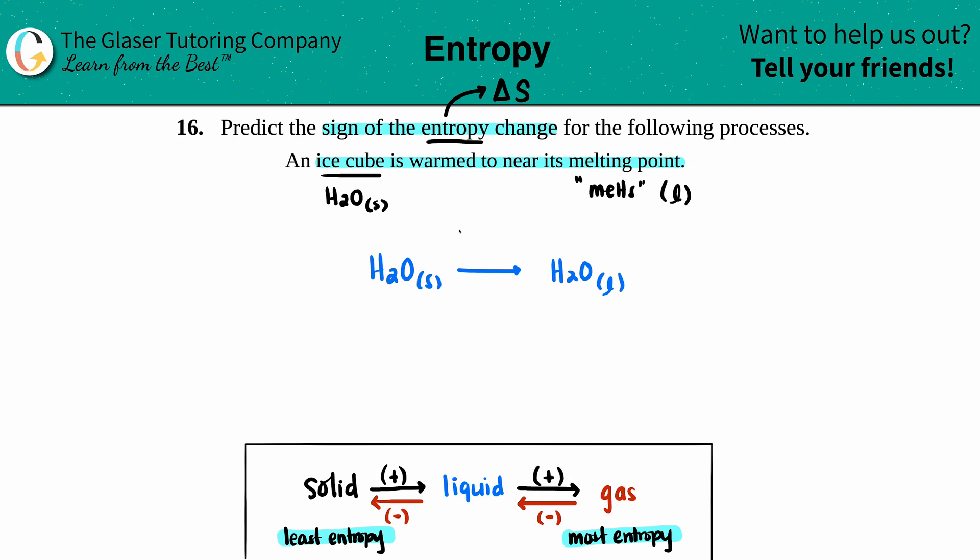From solid to liquid to gas, you're always going to gain entropy. So that means that your delta S value would have to be a positive value. That change in entropy has to be positive because you're going to more entropy. So whether you want to say delta S is a positive value, or you can say that the delta S has to just be greater than zero...